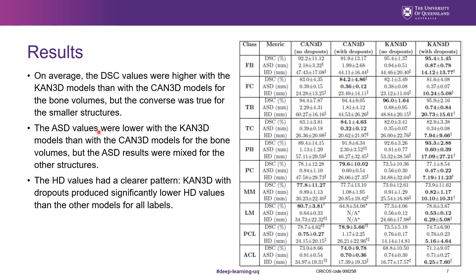On average, the Dice similarity coefficient values and the average surface distance values for the bone volumes were better with the proposed CAN3D models with the Collidoscope Transform. But for the smaller structures, the Dice scores were worse and the average surface distance results were mixed. The Hausdorff distance values had a clearer pattern: the proposed CAN3D model with dropouts produced significantly lower Hausdorff distances than the other models for all labels.